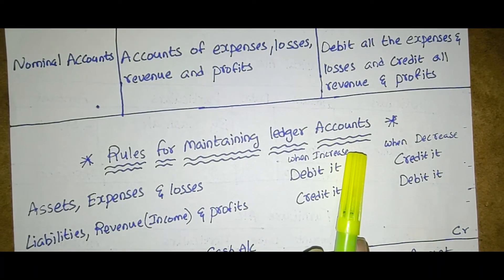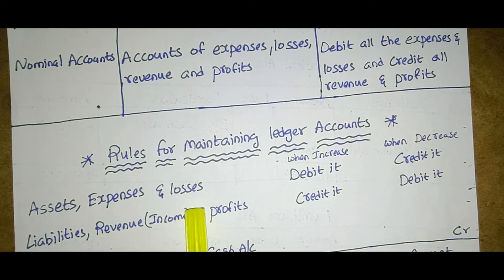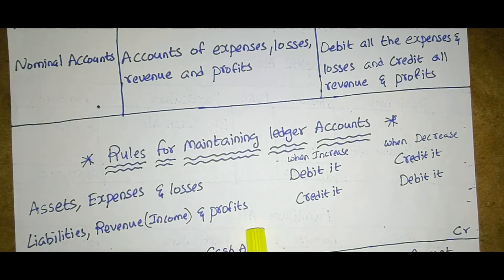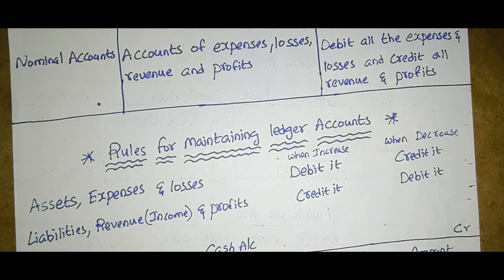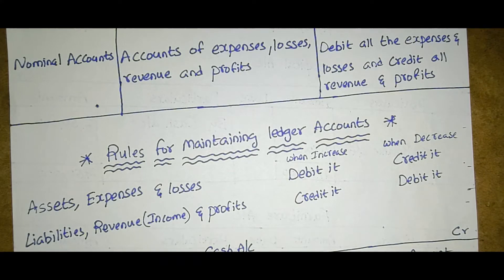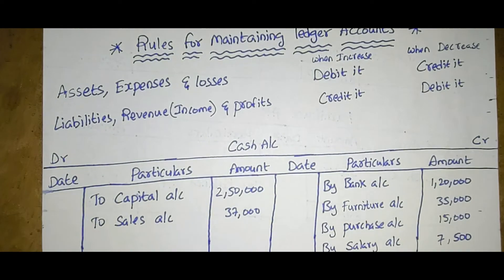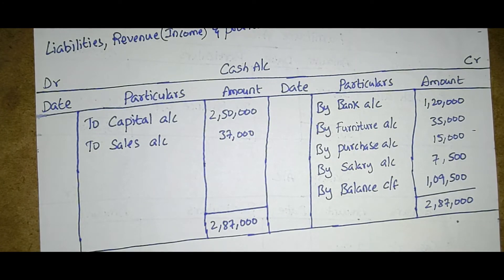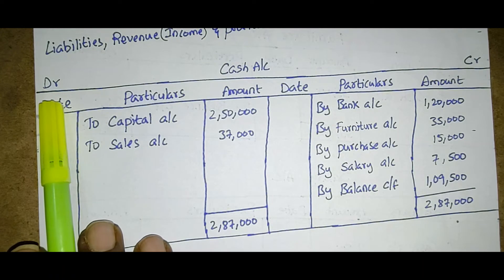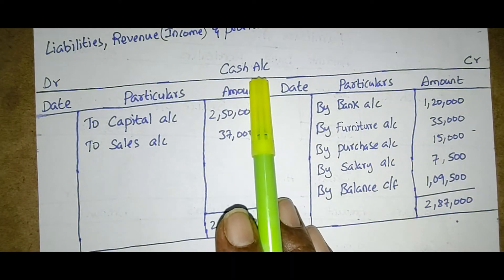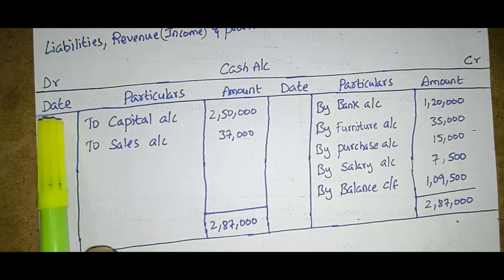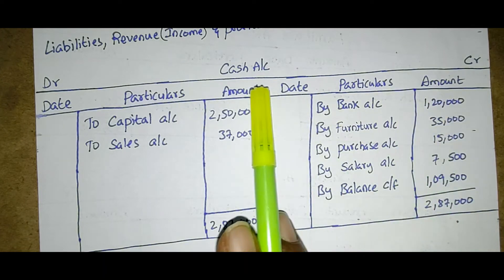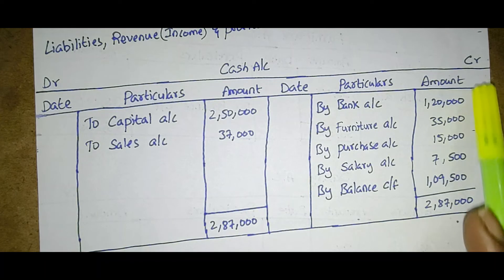Now we will discuss the rules for maintaining ledger accounts. In the ledger, we have to identify the type of each account. Each account gets its own individual table. The left side is the debit side and the right side is the credit side. The table contains: date, particulars, amount on the debit side, and date, particulars, amount on the credit side.